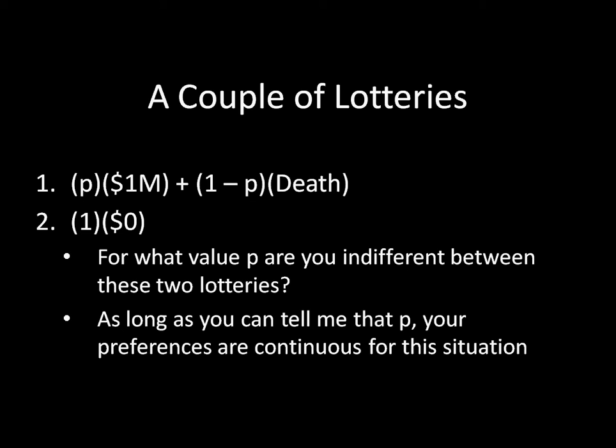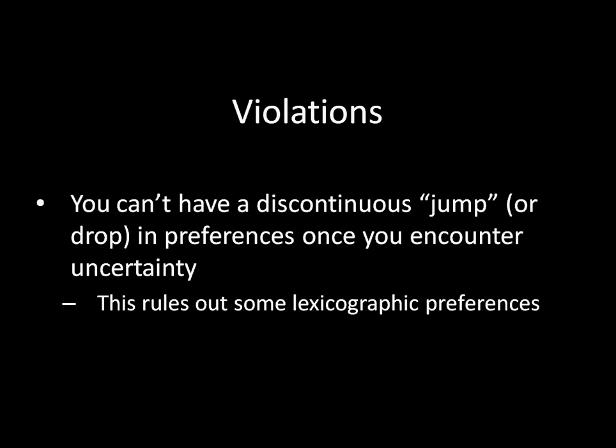Now, that being said, there can be some violations of continuity. Basically, what continuity rules out is some sort of discontinuous jump or drop in your preferences over lotteries once you encounter the slightest bit of uncertainty. In a lot of cases it's pretty strange to have such a jump or drop in your preferences that rules out the possibility of some value p that makes you indifferent. But there is a single case where it kind of makes some sense, and that's something known as lexicographic preferences.